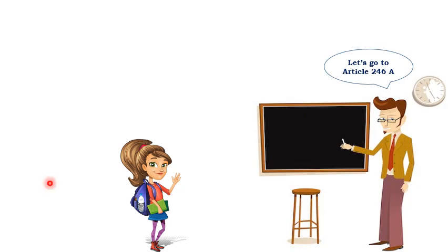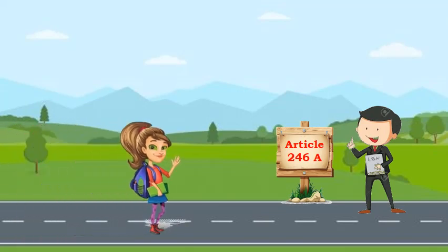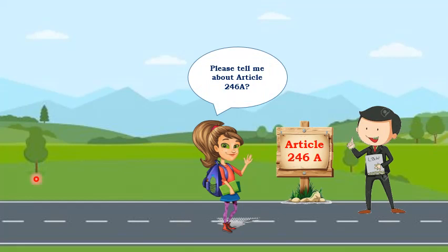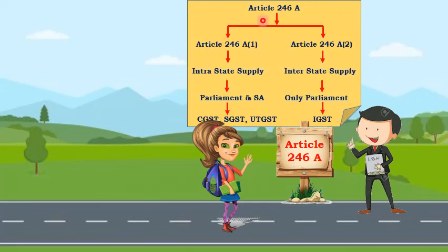Now we know that GST came to India through Article 246A. So let's go to Article 246A and understand. Please tell me about Article 246A. The Constitution was amended and Article 246A was introduced, through which GST came to India. Article 246A has two subsections: subsection 1 and subsection 2. Subsection 1 talks about intra-state supply — meaning supply within the same state or same UT. In the case of intra-state supply, both Parliament and the State Assembly have the right to make laws. Under this power, Parliament made the CGST Act and the state made the SGST Act. CGST means Central GST, SGST means State GST, and UTGST means Union Territory GST.